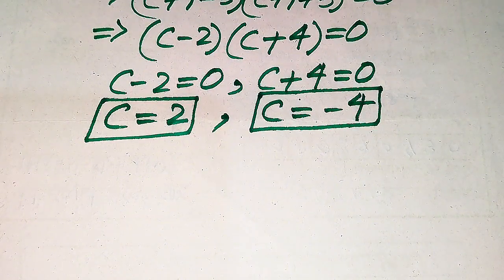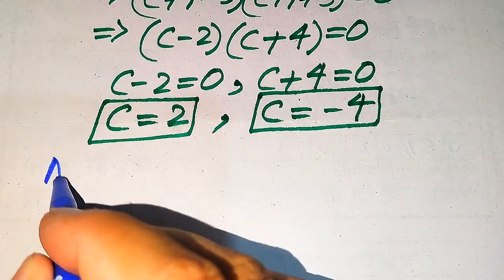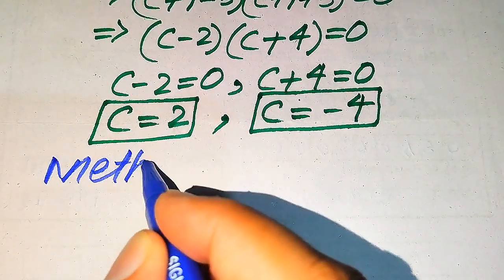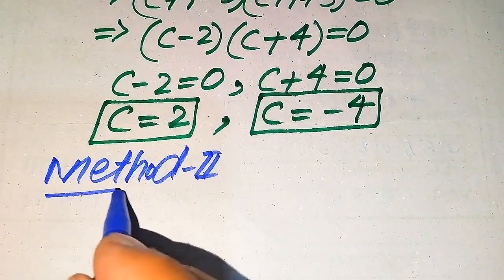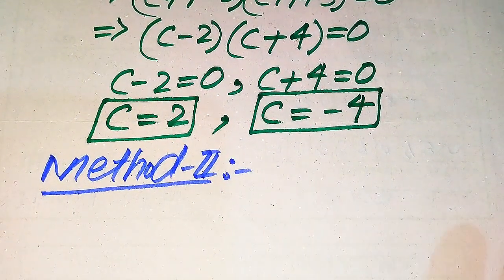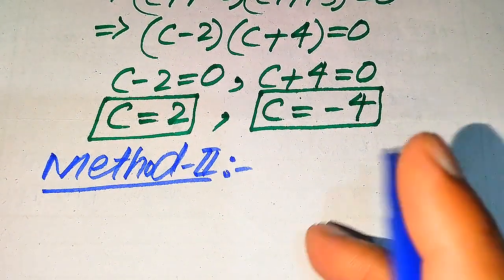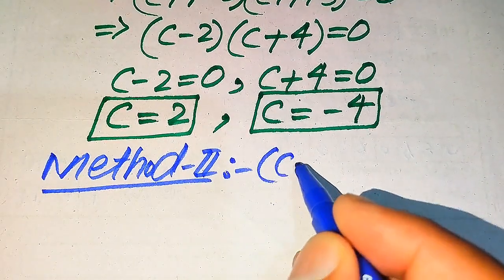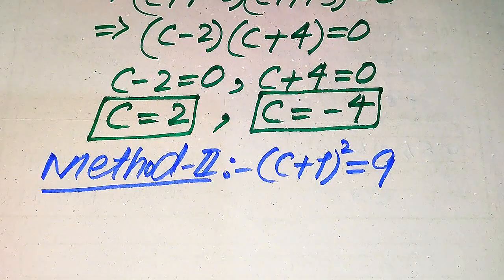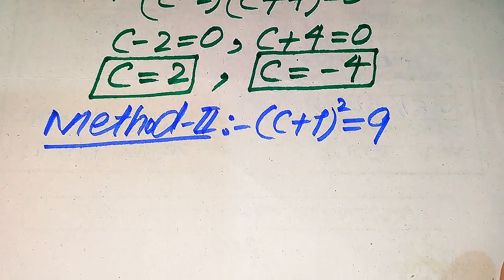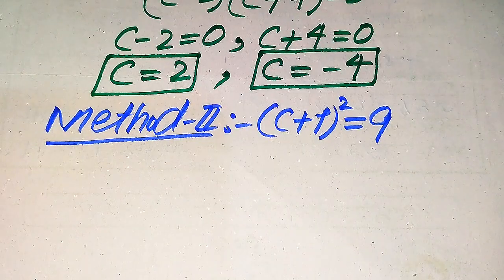So in the first method we get two roots of the given equation. Now we move towards our second method. I suggest another method to find the roots of the above equation. In the second method we copy down the given equation: (c + 1)² = 9, and we solve this problem with the help of a square root.